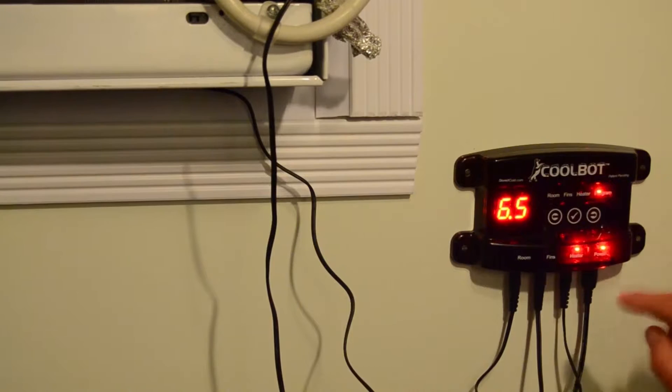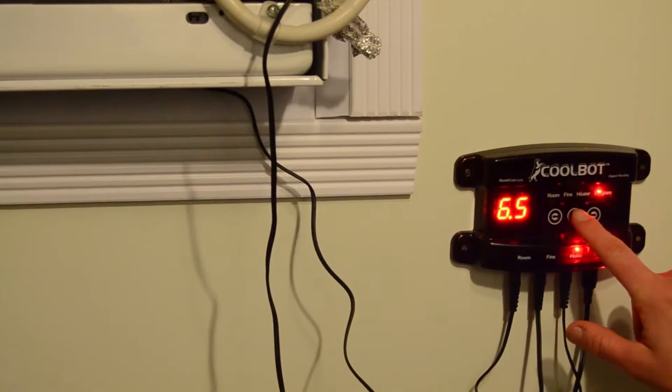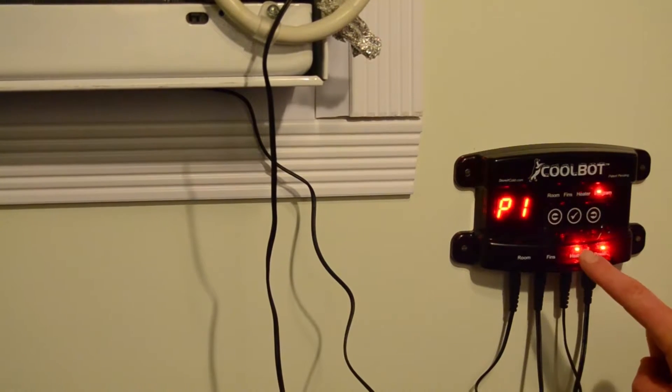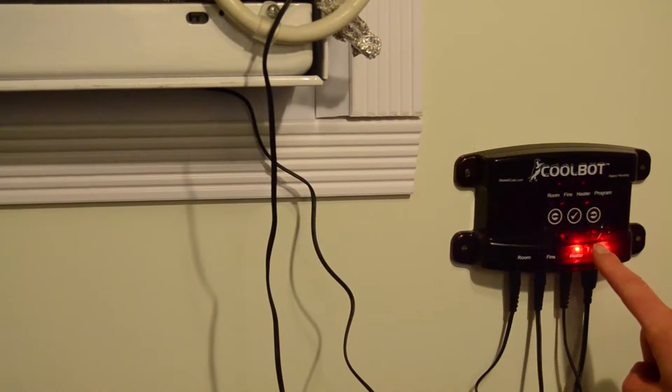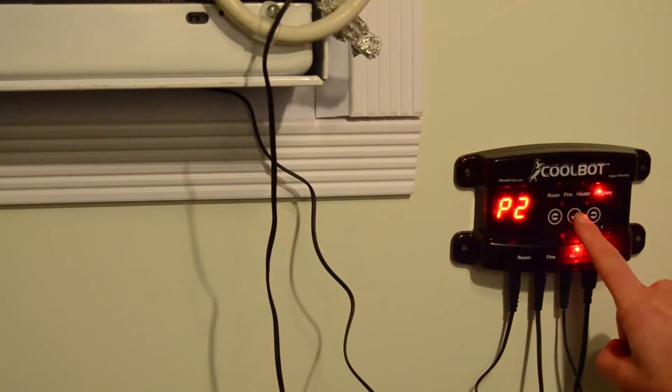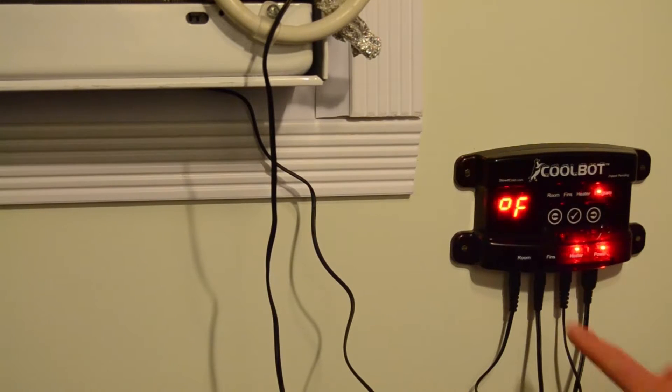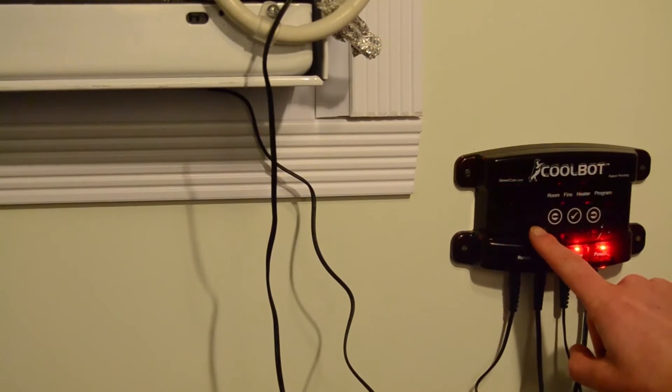the checkmark button five times. It should now blink P1. Next, press the right arrow to change it to P2 and press the checkmark button again to select. It will blink the current setting, and you can use